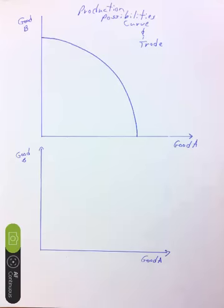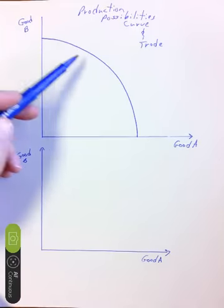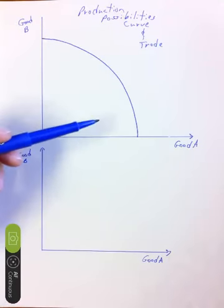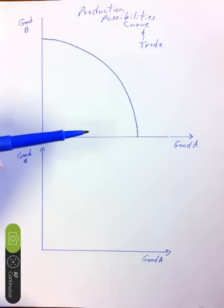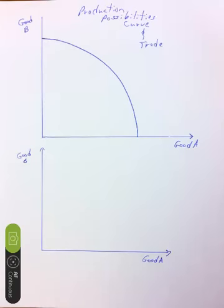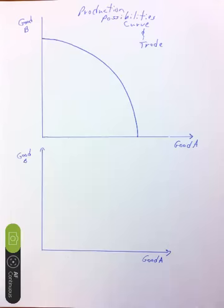You might remember from the production possibilities curve: what you have is a line or a curve that plots out all the possible combinations of good A and good B that can be produced given your constraints. Your constraints are your factors of production, which are land, labor, capital, and entrepreneurial ability. Those factors of production are mixed together with technology to get this production possibilities curve. So imagine that you're living in a country and there's no possibility of trade — then you are constrained by your production possibilities curve.